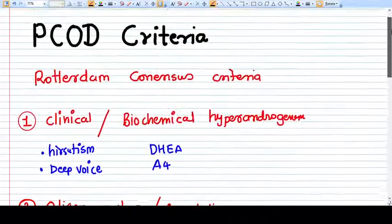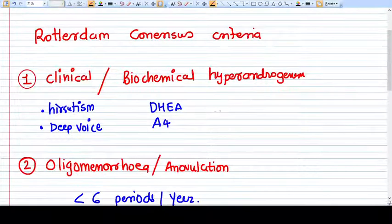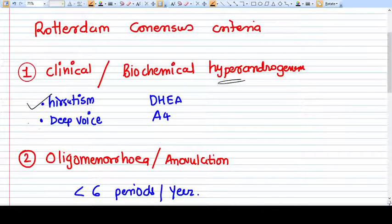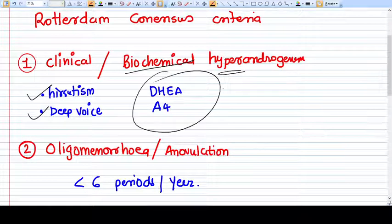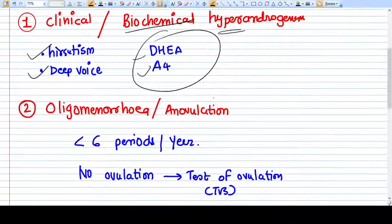The first criteria is clinical or biochemical hyperandrogenism. If there are clinical signs of hyperandrogenism present, then that can be taken as a criteria. The signs can be hirsutism or deep voice. The biochemical criteria is not well defined, but you can go for serum levels of DHEA or A4.